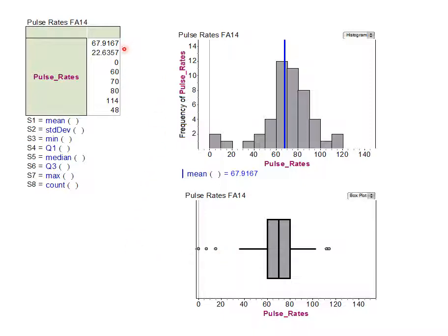What we have here is a summary table from Fathom. In order, the numbers listed above are the mean, the standard deviation, followed by the five number summary: min, Q1, median, Q3, max, and that's followed by the count, how many data values we had to work with.